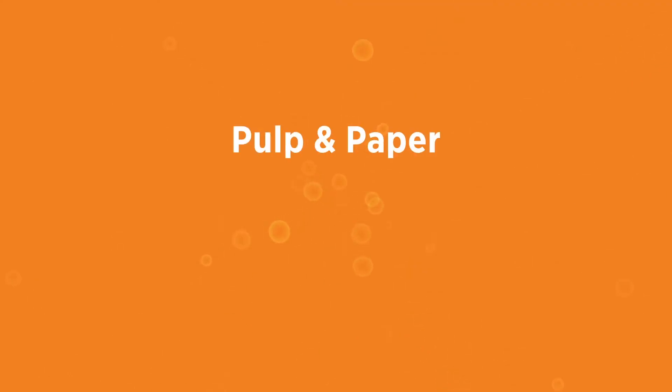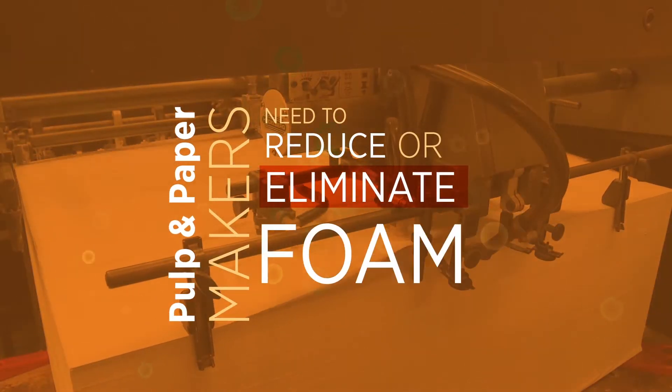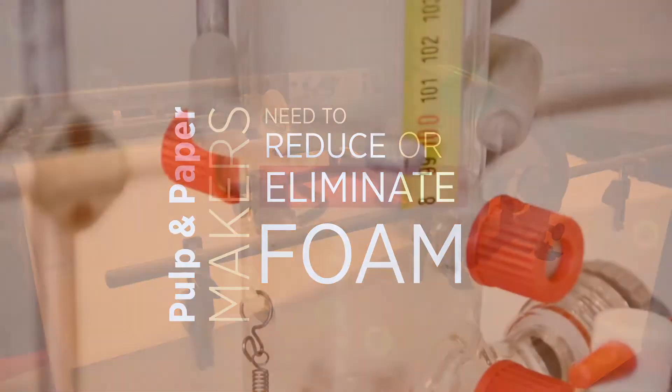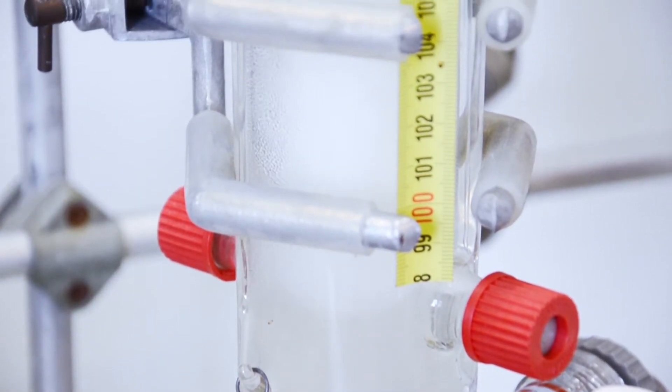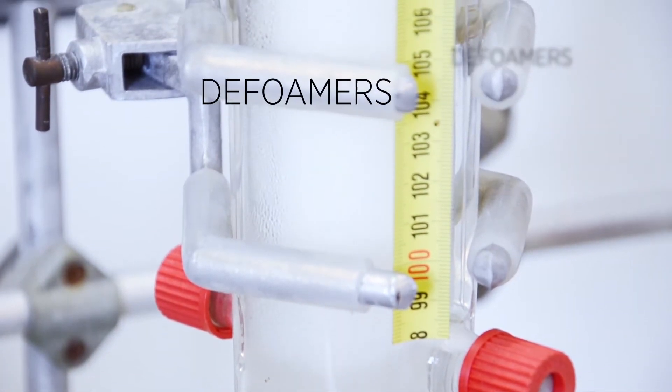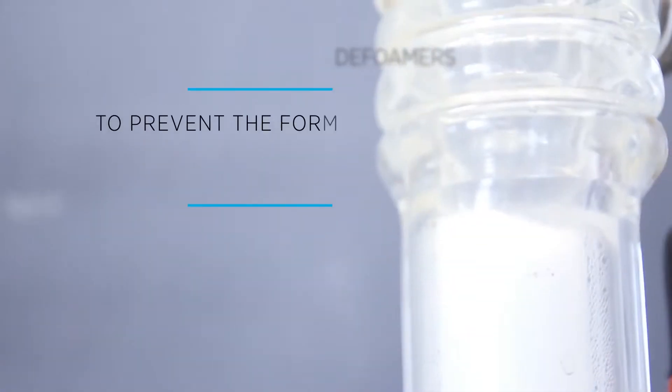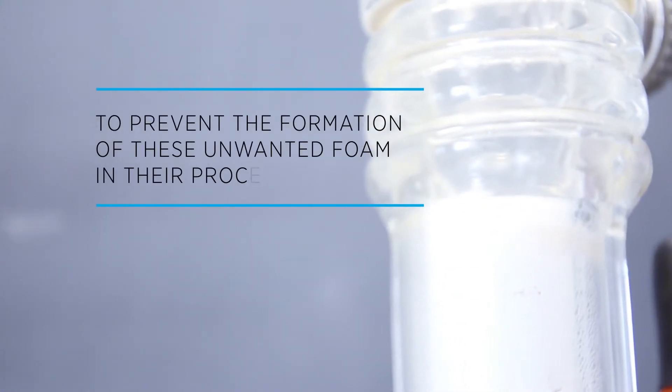Pulp and paper makers need to reduce or eliminate foam. Chemical companies use foam control products, also known as defoamers or antifoams, to prevent the formation of unwanted foam in their processes.